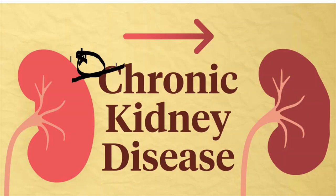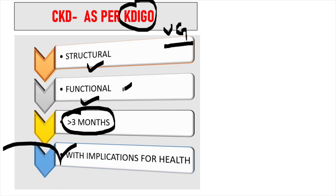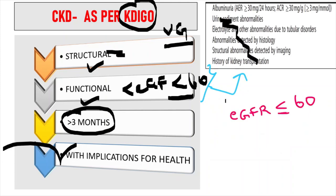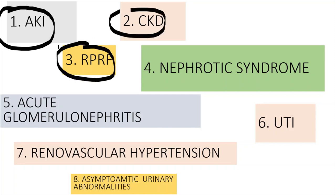For UG students, just remember this definition of CKD: as per KDIGO — Kidney Disease Improving Global Outcomes — the standard international guideline group, CKD is defined as structural or functional abnormality of the kidney lasting for more than 3 months with implications for health. Functional means eGFR less than 60; structural means shrunken kidney. So: AKI is renal dysfunction under 7 days, CKD is more than 3 months, and in between is rapidly progressive renal failure.